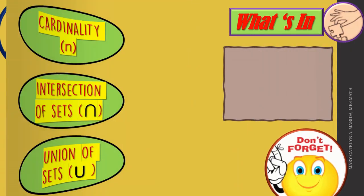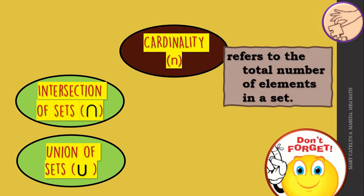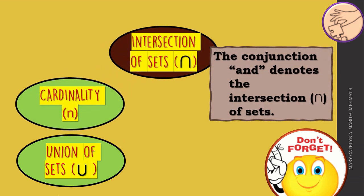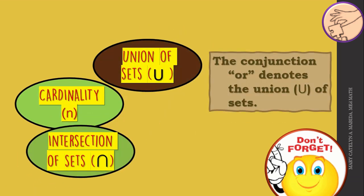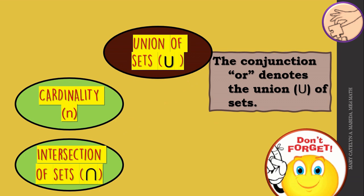Now let's begin. Always remember that cardinality refers to the total number of objects in a set; it is denoted by the small letter n. The conjunction 'and' denotes the intersection of sets, which is denoted by this symbol. And lastly, the conjunction 'or' denotes the union of sets, which is denoted by this symbol.